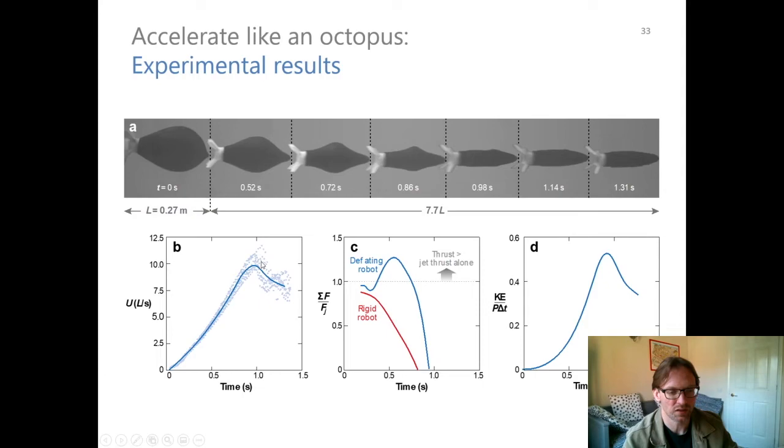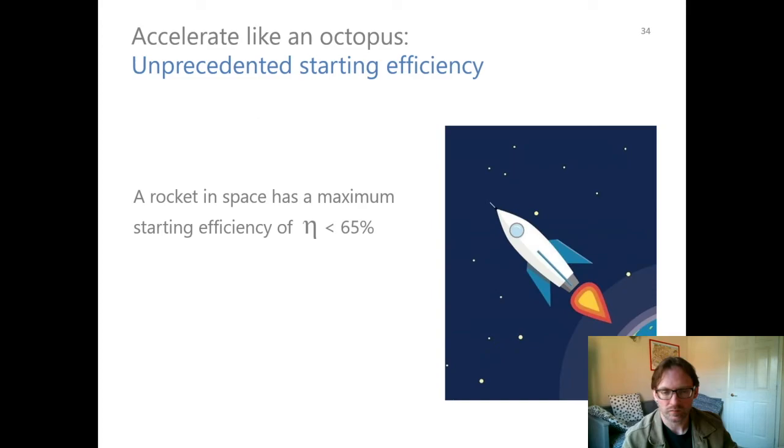So sometimes we're getting almost 12 body lengths per second, but we're always getting around 10, at least as our peak.